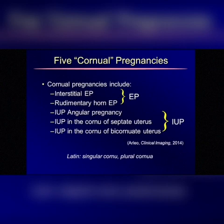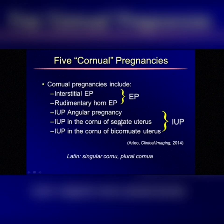So there you have it: the five corneal pregnancies, two of which are ectopic pregnancies — the interstitial ectopic and the rudimentary horn ectopic — and then three of them intrauterine pregnancies: the one that has been called angular pregnancy, the one in the corneau of a septate uterus, and the one in the corneau of a bicornuate uterus.